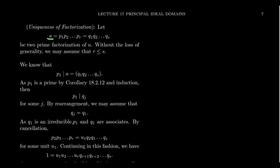Now for the uniqueness of factorization — this is where the principal ideal property becomes essential. Suppose A has two distinct factorizations into irreducibles: P₁ · P₂ · … · Pᵣ and Q₁ · Q₂ · … · Qₛ, where each Pᵢ and Qⱼ is irreducible in D. Without loss of generality, assume r ≤ s. We'll prove r = s and that there's a one-to-one correspondence between the irreducibles, making them associates of each other.